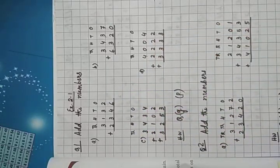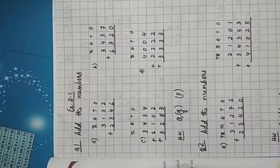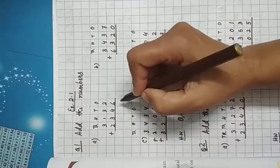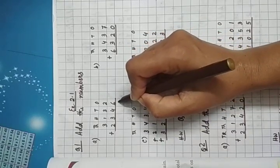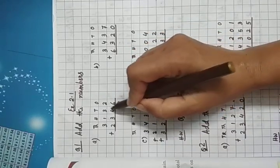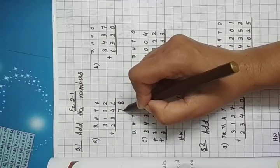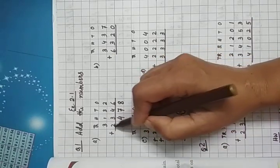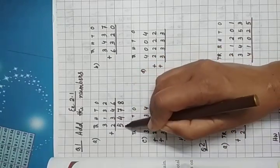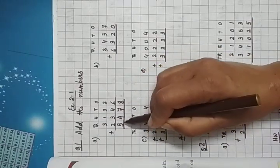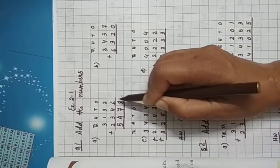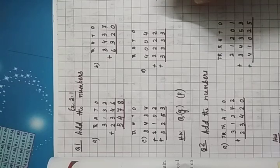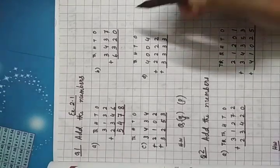I had told you we will start from the 1s place. So start adding from the 1s place. At the 1s place, which numbers are there? 2, 2 plus 6. What is the number? It is 8. So write 8. Then 3 plus 4, 7. 3 plus 1, 4. 3 plus 2, 5. So what is the answer? 5478. So this exercise is addition without carrying. Simple. Simple for you also.